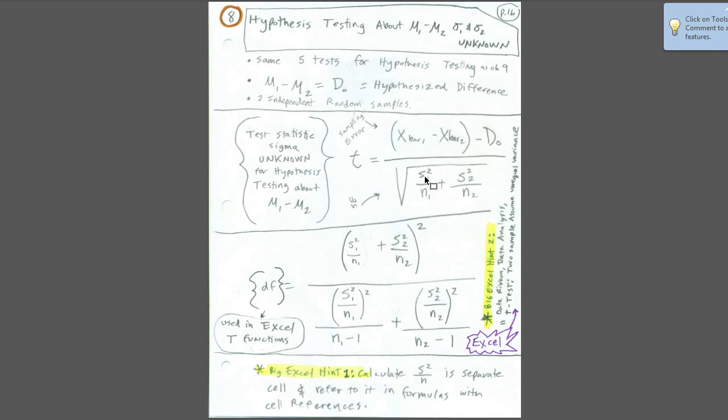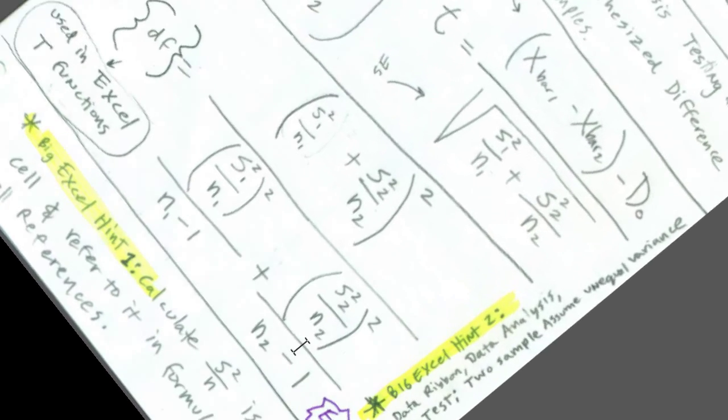And remember, we don't know standard deviation from the population. So we have to use s, which is sample standard deviation, and square to get sample variance for both samples. And here's our degrees of freedom. We saw last video, this looks big and scary. But when we break it apart in Excel, it's pretty straightforward.